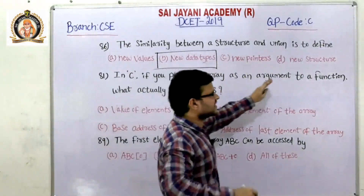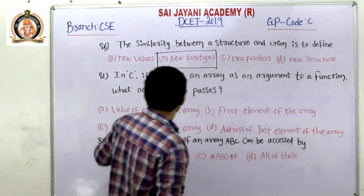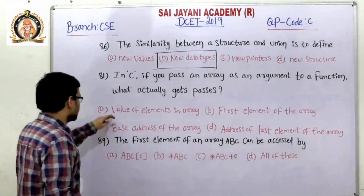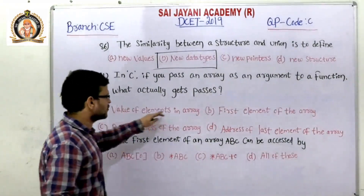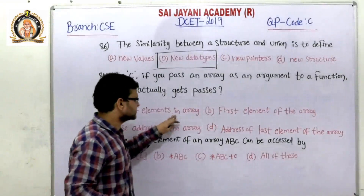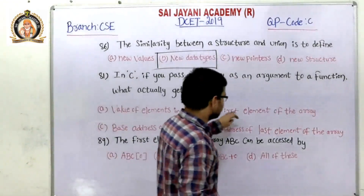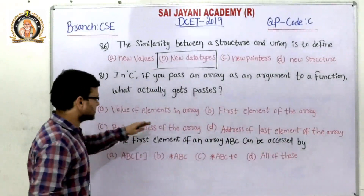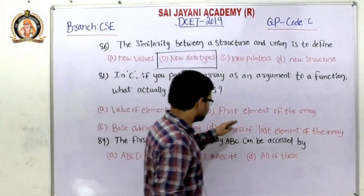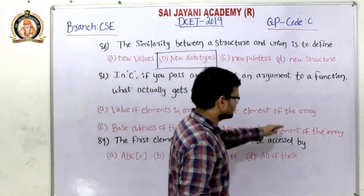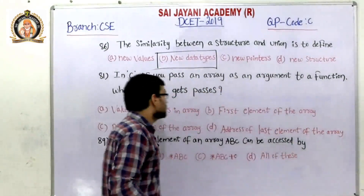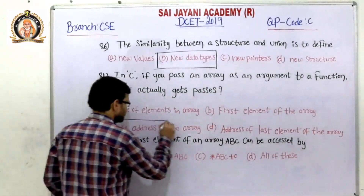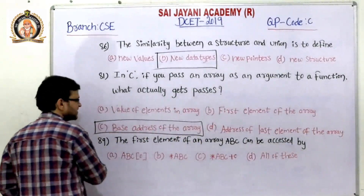Question number 81: in C, if you pass an array as an argument to a function, what actually gets passed? The options are: option A — value of the elements in the array, option B — first element of the array, option C — base address of the array, option D — address of the last element of the array. For question number 81, option C — base address of the array — gets passed.